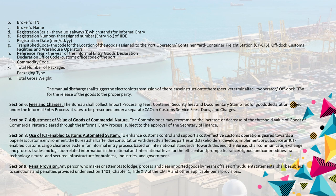Section 8. Use of ICT-enabled Customs Automated System. To enhance customs control and support a cost-effective customs operations geared towards a paperless customs environment, the Bureau shall, after due consultation with directly affected parties and stakeholders, develop, implement, or outsource an ICT-enabled customs cargo clearance system for informal entry process based on international standards. Towards this end, the Bureau shall communicate, exchange and process trade and logistics-related information in the national and international level for the efficient and prompt clearance of goods and commodities in a technology-neutral and secured infrastructure for business, industries, and government.